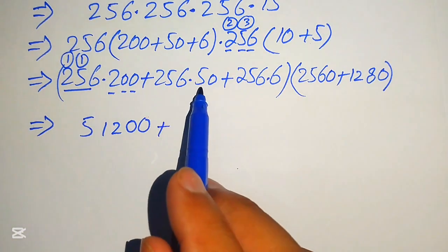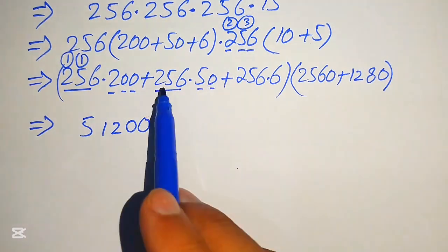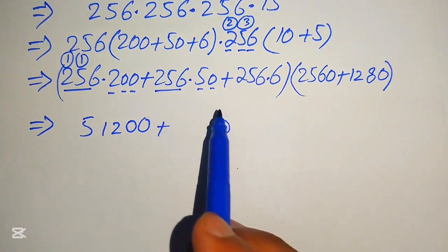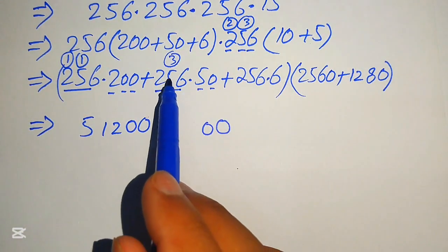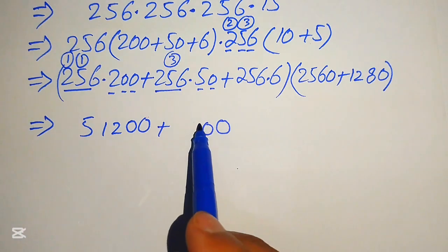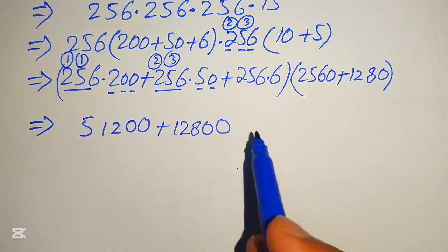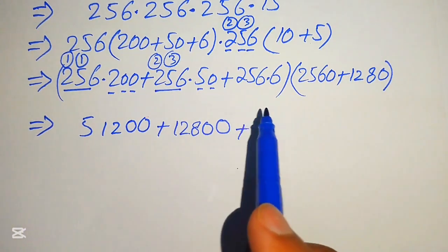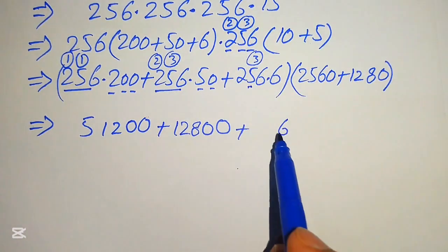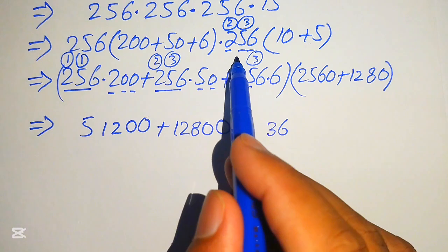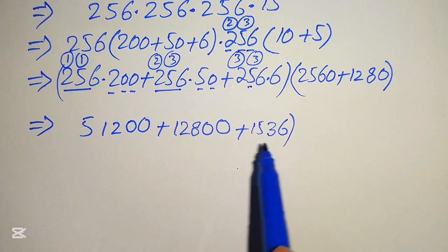For 256 times 50: 5 times 6 is 30, write 0 carry 3; 5 times 5 is 25, plus 3 is 28, write 8 carry 2; 5 times 2 is 10, plus 2 is 12. With one trailing zero this gives 12,800. For 256 times 6: 6 times 6 is 36, write 6 carry 3; 6 times 5 is 30, plus 3 is 33, write 3 carry 3; 6 times 2 is 12, plus 3 is 15.